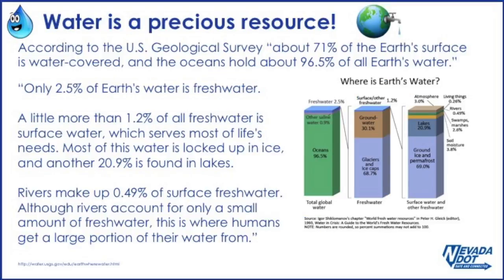According to the U.S. Geological Survey, about 71% of the Earth's surface is water covered, and the oceans hold about 96.5% of all Earth's water. Only 2.5% of Earth's water is freshwater. A little more than 1.2% of all freshwater is surface water, which serves most of life's needs.